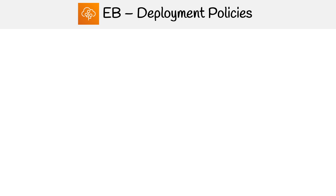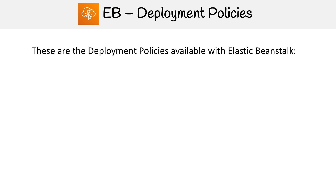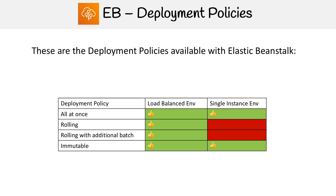Elastic Beanstalk comes with deployment options built in, which is definitely going to save you a lot of time so you don't have to set up your own code pipeline. The deployment policies available with Elastic Beanstalk are: all at once, rolling, rolling with additional batch, and immutable. We're going to be walking through every single one of these.